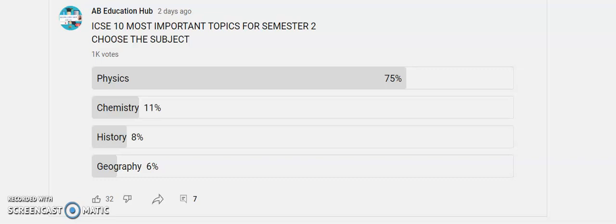By the poll results, you can see that 75% of 1000 votes is for physics. In this video, I am going to tell you the most important topics that you must prepare. Good news for you is that the physics paper for semester 2 examination will not be very tough like it was in semester 1 examination.